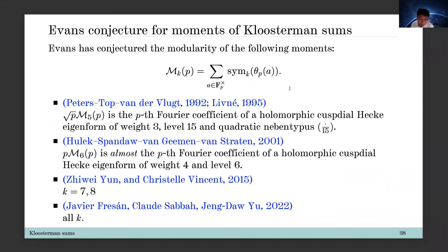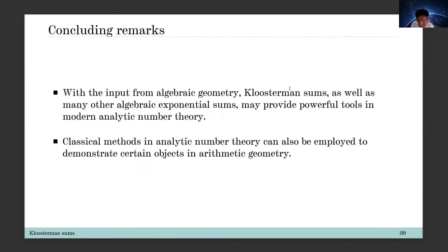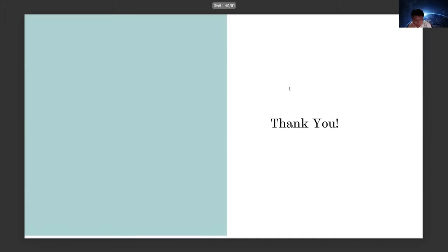Now we are coming to the end of the talk. As concluding remarks: in many counting problems in analytic number theory we usually require estimates for algebraic exponential sums, and in particular Kloosterman sums provide very typical and important examples. You can use algebraic geometry to study analytic number theory, and in the opposite direction we can use classical methods in analytic number theory to characterize objects in algebraic geometry. This is the task of this talk. Thank you very much for your attention.